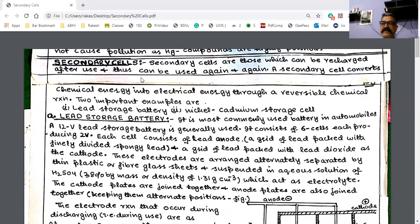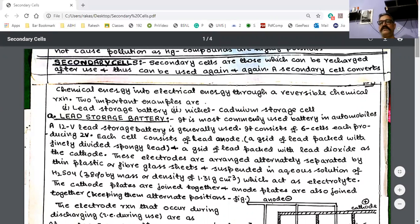So first of all, these cells will work as electrochemical cells. After all, when we recharge them, they will be acting as electrolytic cells. We will be reversing the reaction by passing the electric current. There are two important types: one is lead storage battery, second is nickel cadmium storage cell.